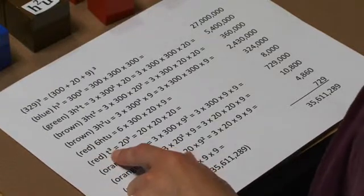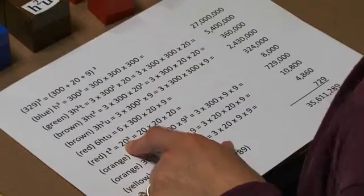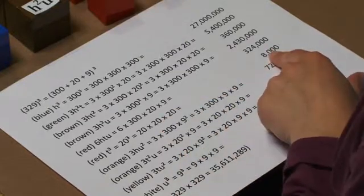Next would be our red cube or our 10 cube, which would be 20 cubed or 20 times 20 times 20. That would equal 8,000.